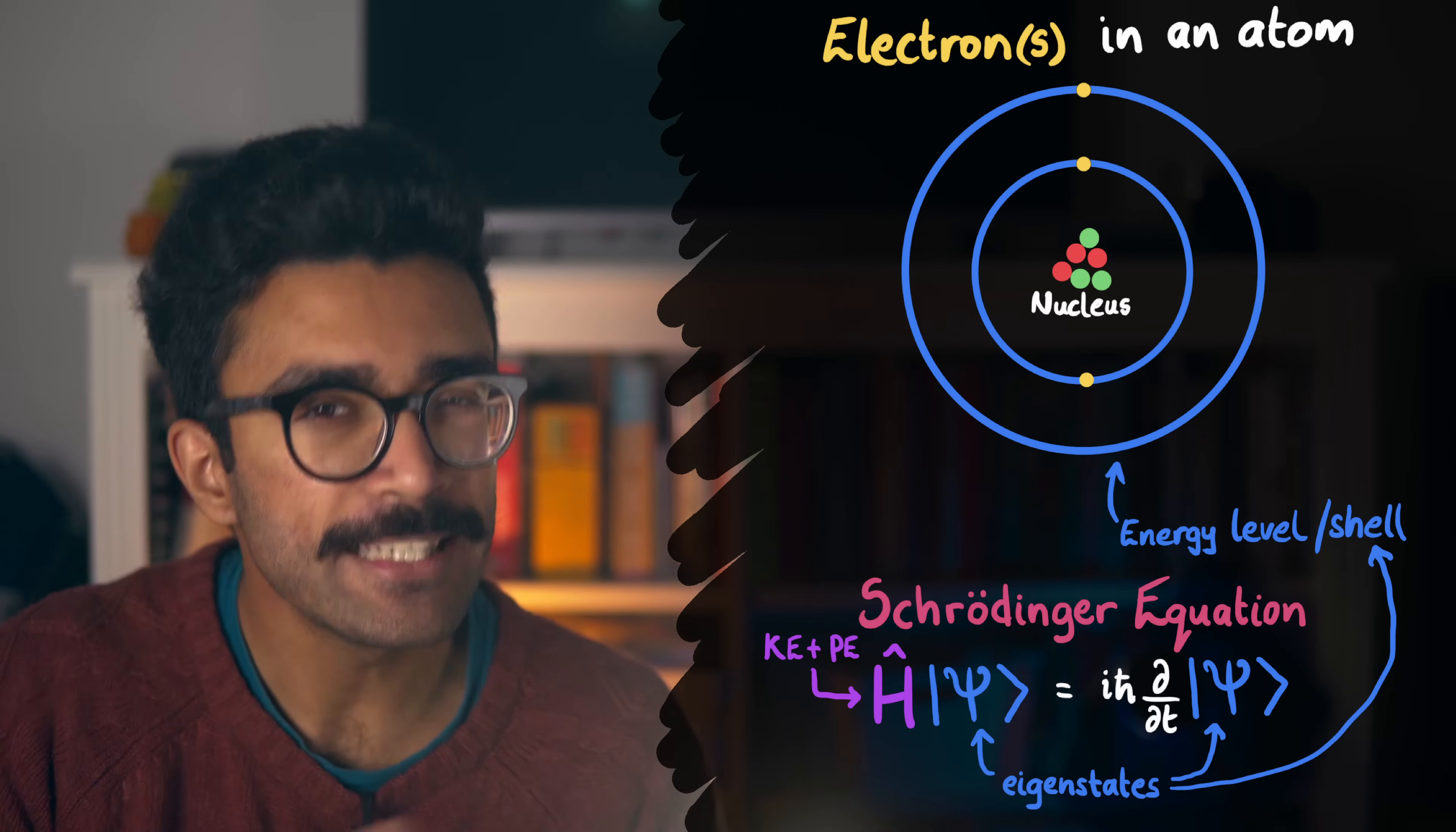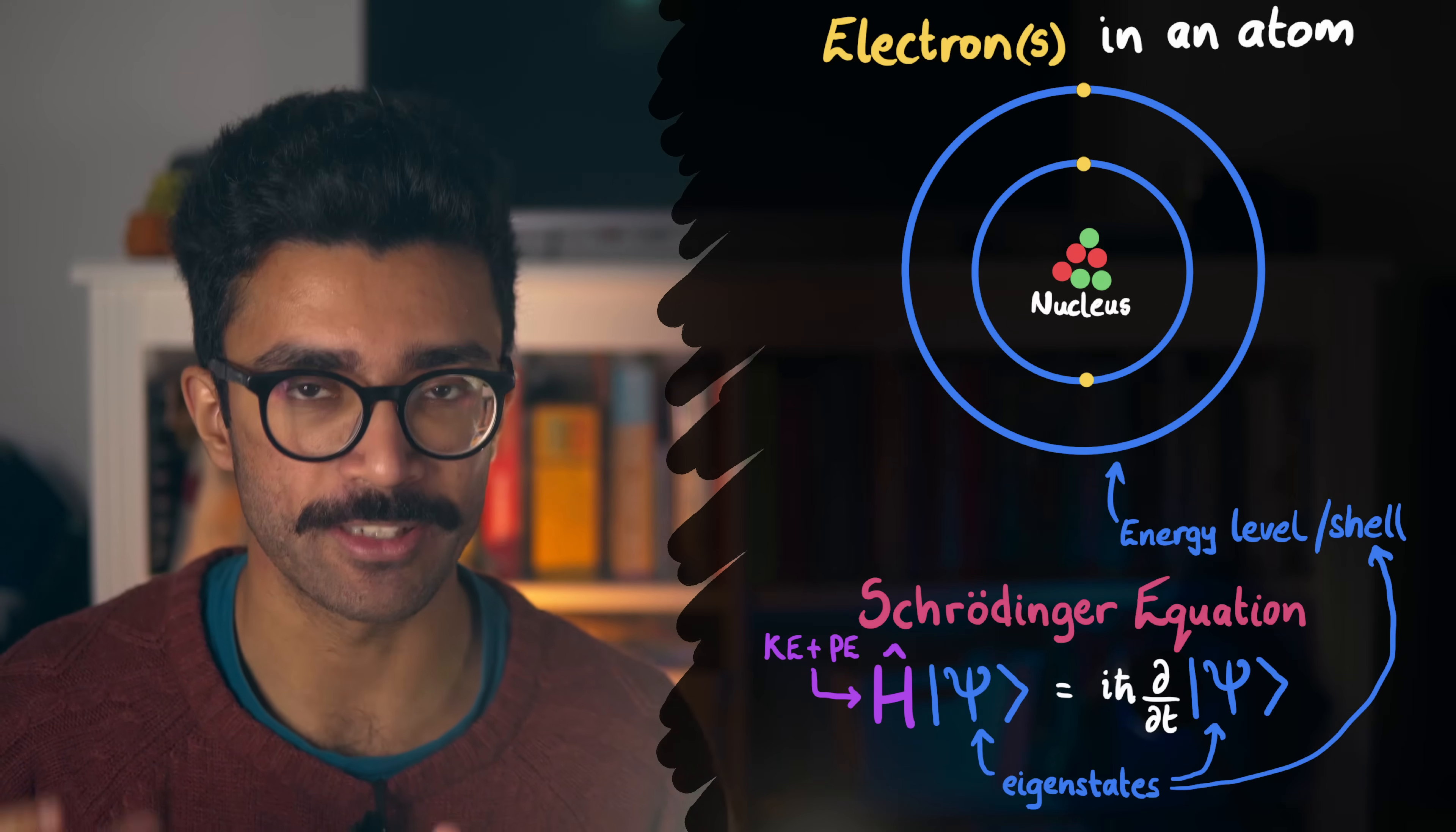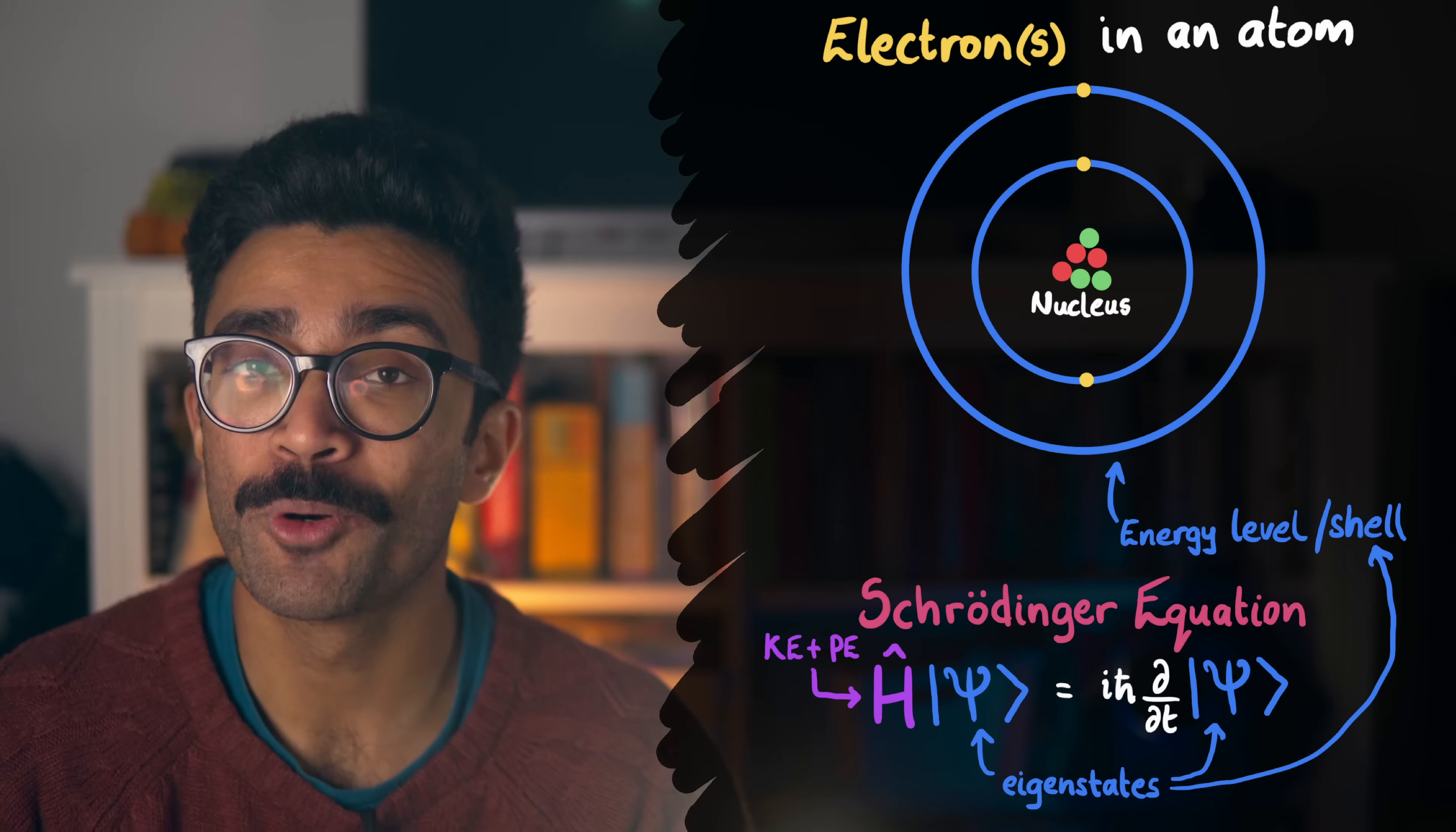Now, this whole thing works for any system that we're studying, however simple or complex, as long as we're actually able to solve this equation, and we have the mathematical skills to do so, in order to find the allowed energy states. Now, let's take a look at what happens to our allowed energy levels if our system is modified, just slightly. But, before we do that, I'd like to take a moment to thank the sponsor of this video, Shortform.